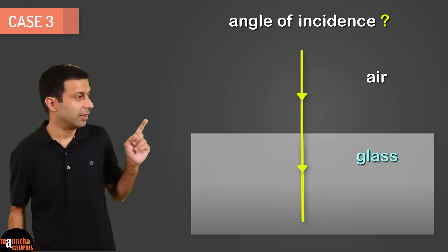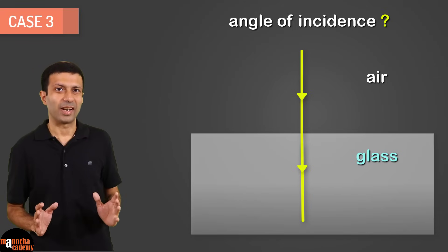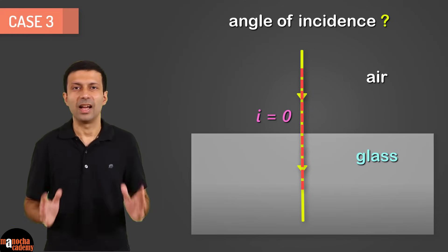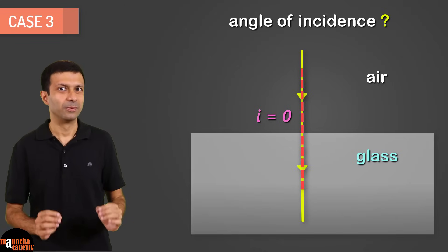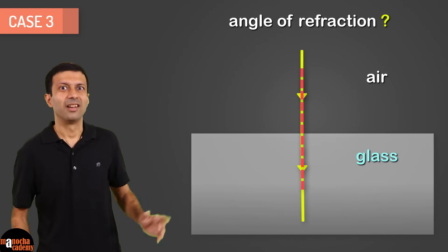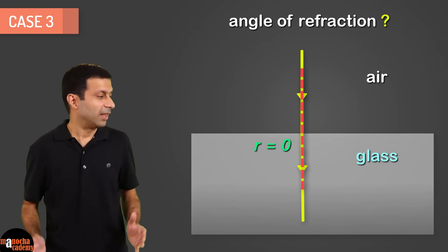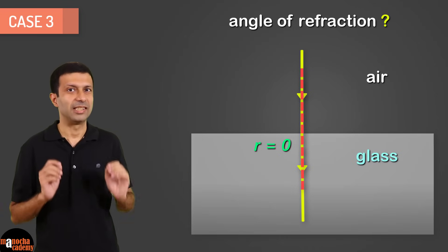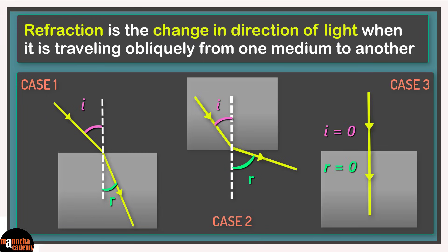What is the angle of incidence here? That's right. It's zero. The angle between the incident ray and the normal is zero. What is the angle of refraction in this case? Correct. It's zero. The angle between the refracted ray and the normal here is zero. Let's place this special case of normal incidence on our concept board.